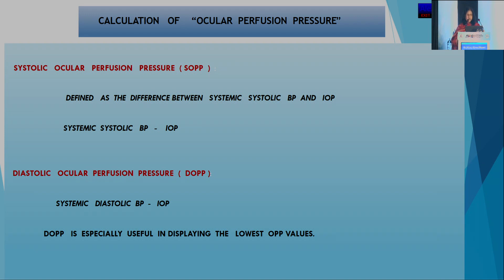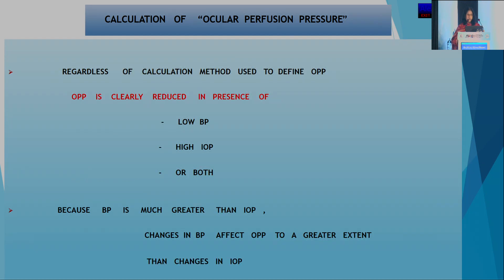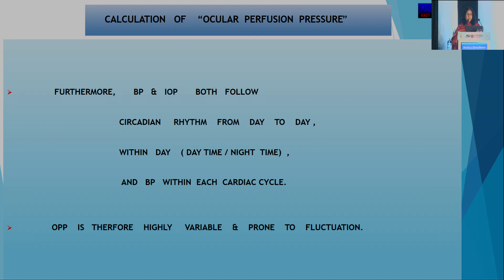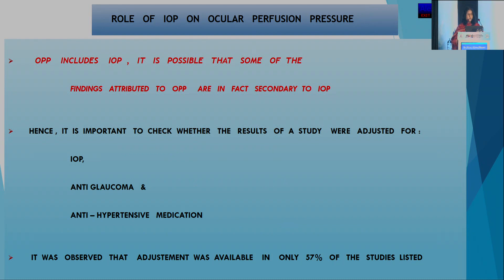Systolic OPP equals systemic systolic BP minus IOP, and diastolic OPP equals systemic diastolic BP minus IOP. Diastolic OPP is especially useful for displaying the lowest OPP values. Regardless of calculation method, OPP is clearly reduced with low blood pressure, high IOP, or both. Because blood pressure is much greater than IOP, changes in BP affect OPP to a greater extent than changes in IOP. BP and IOP both follow circadian rhythms—day to day, within-day, daytime, nighttime, and within each cardiac cycle—so OPP is highly variable and prone to fluctuation.